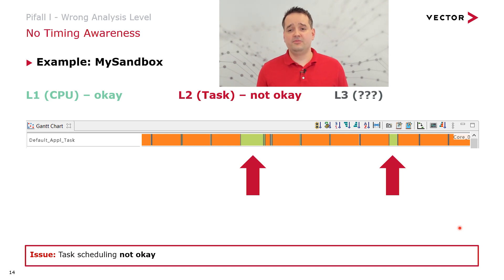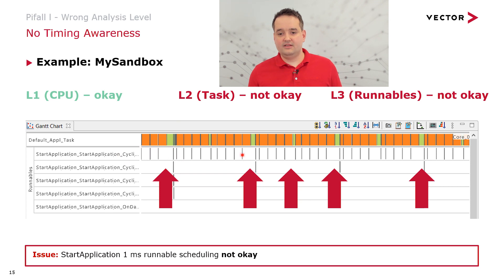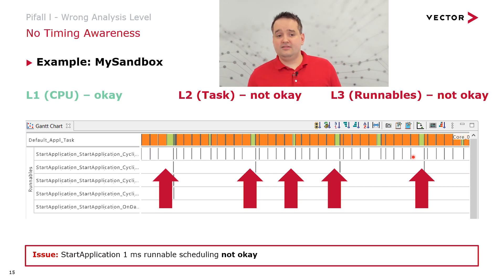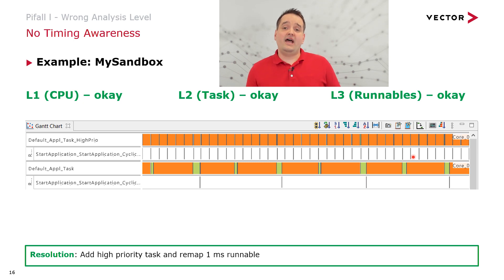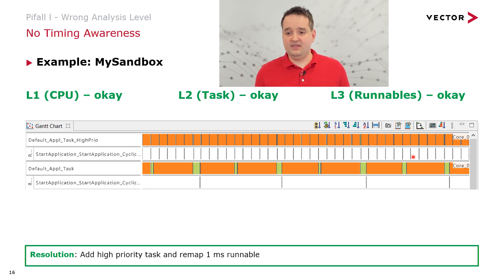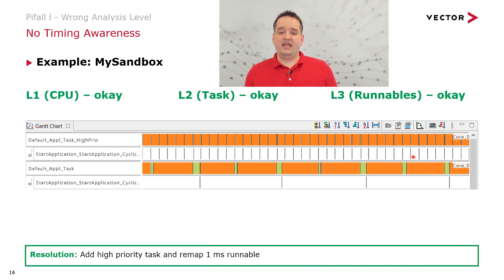This issue is confirmed by a level 3 runnable analysis. The 1ms runnable does not have the right scheduling pattern — it's delayed on several occasions. We can think of a fix. In this case it's rather simple: add another task with higher priority and map the 1ms runnable to it. Here you can nicely see the issue is resolved. Of course, this has a very different impact depending on whether you do this at the beginning of your project or three weeks before SOP.